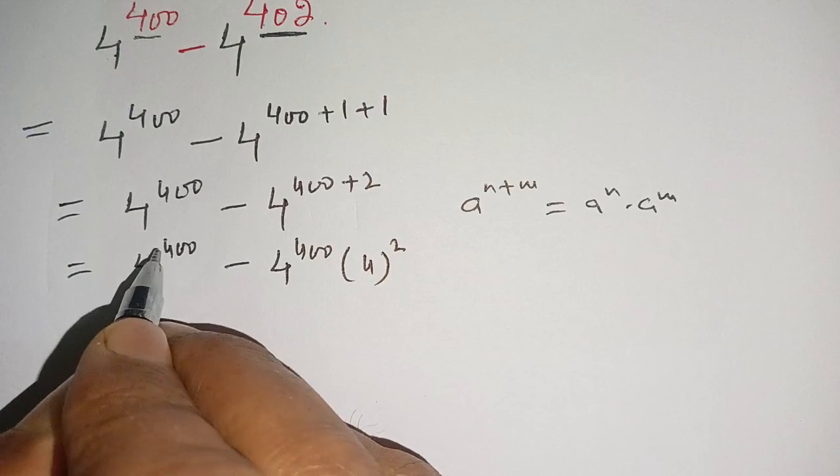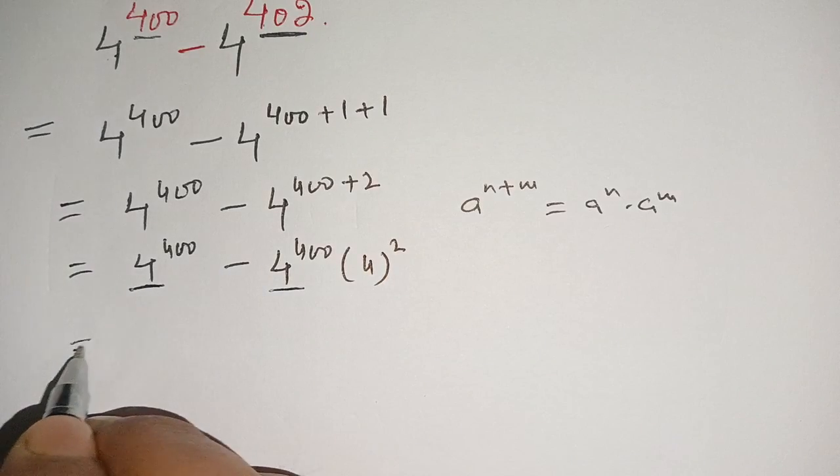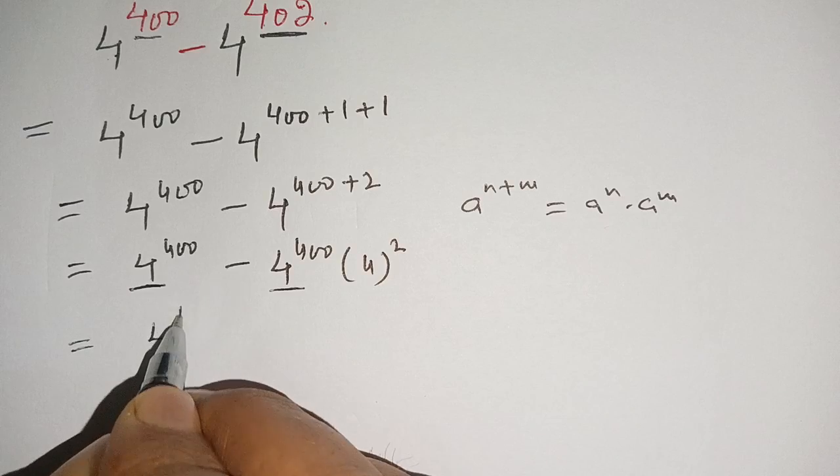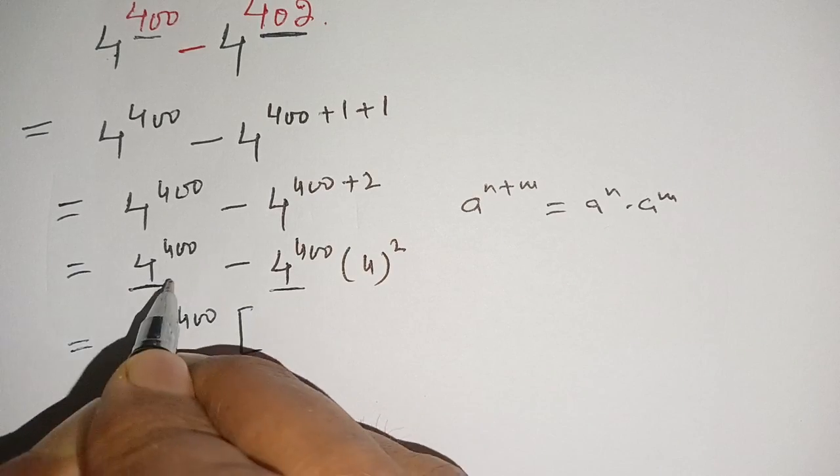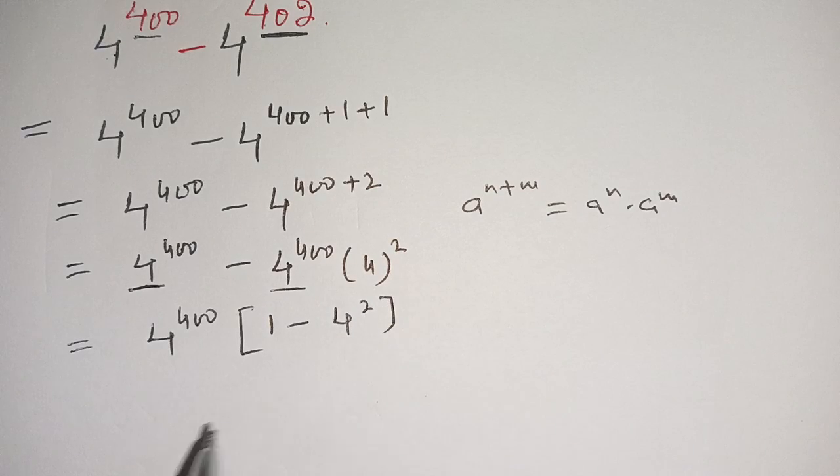From here we can take out 4 power 400 from this term and from this term. We get 4 power 400 and remaining is 1 minus 4 power 2.